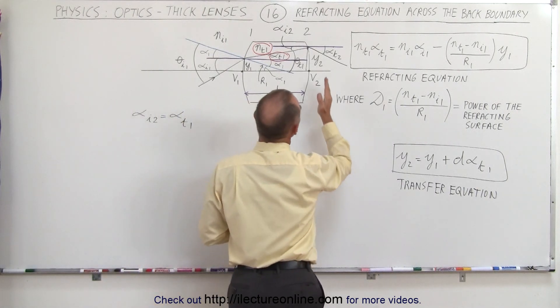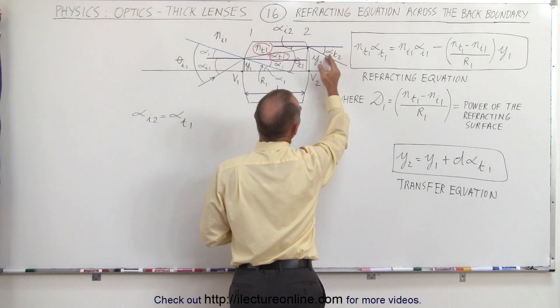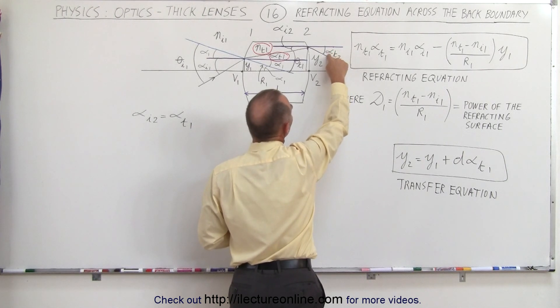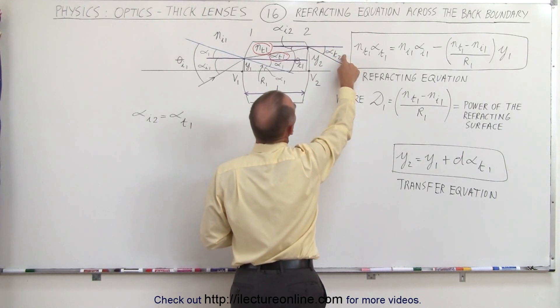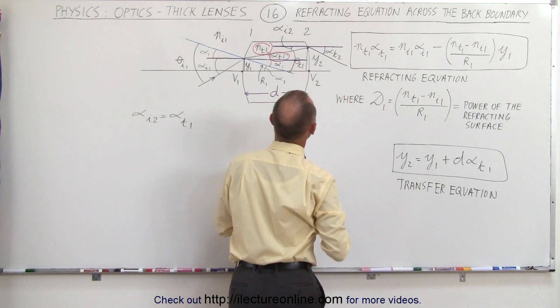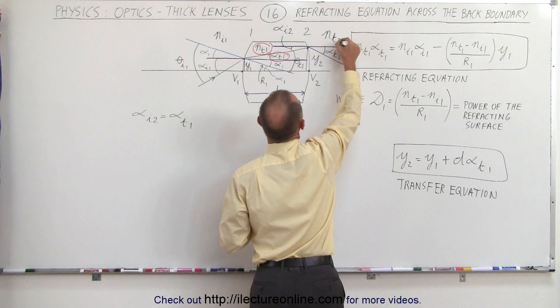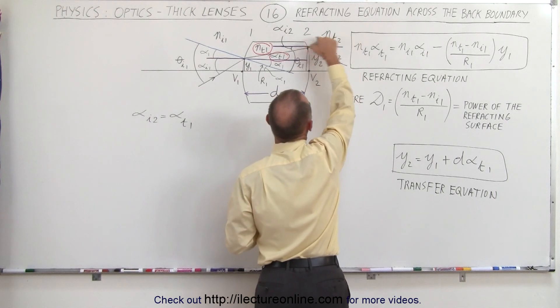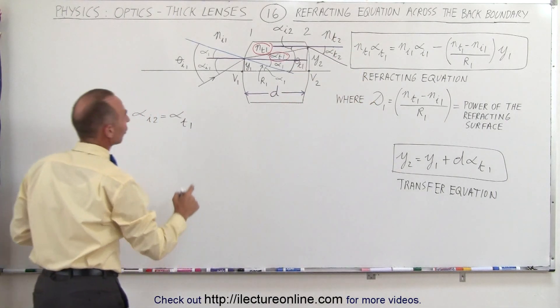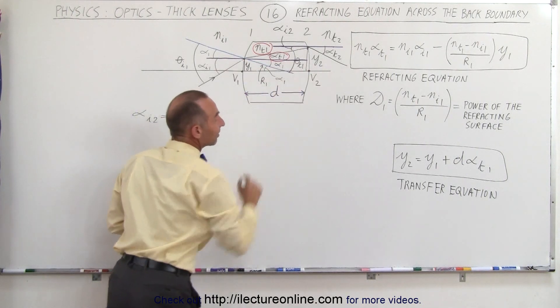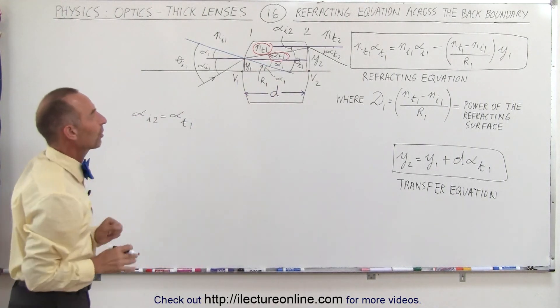So first of all, we want to know what happens on the other side of the boundary. We want to know the angle which is alpha T2, and we want to know the index of refraction on the other side. So we're going to call that NT2, the index of refraction on the other side of the boundary. So this equation on the front side will now become the equation on the second side with the appropriate substitutions.